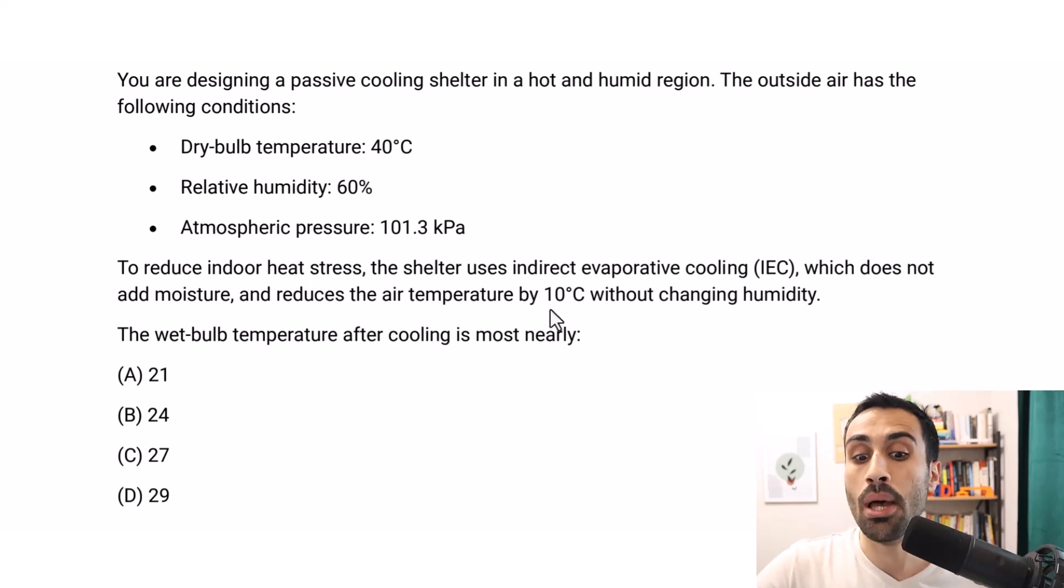So we reduce that by 10°C using indirect evaporative cooling, and it does not change the humidity. Then we want to find the wet bulb temperature after we use this IEC system. So there's a before state without the IEC system, then there's the after state, which we're going to analyze and find the wet bulb temperature for. Pause the video and see if you can solve this.